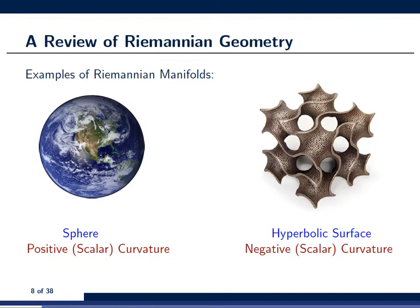Here are two examples of Riemannian manifolds. On the left hand side we have the sphere, which is said to be a Riemannian manifold of positive scalar curvature — meaning that if you draw a triangle on a sphere, it looks fatter in the sense that the sum of the interior angles is always greater than 180 degrees. On the right hand side we have a hyperbolic surface, which is of negative scalar curvature, meaning that a triangle drawn on this surface looks skinnier, with the sum of interior angles less than 180 degrees.